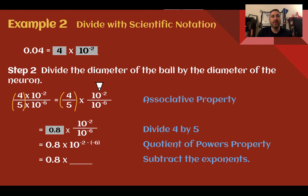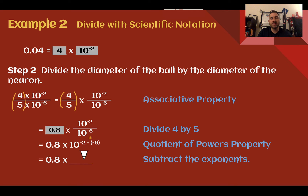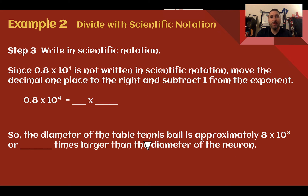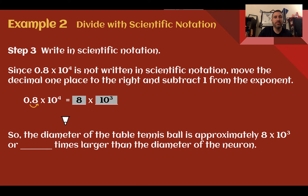So we divide the ball by the neuron: 4 times 10 to the negative 2 divided by 5 times 10 to the negative 6. Group the factors: 4 divided by 5 is 0.8. Then use the quotient of powers property for the powers of 10 — when dividing, we subtract: negative 2 minus negative 6. A double negative is the same as adding, so negative 2 plus 6 gives us 10 to the positive 4. So we have 0.8 times 10 to the 4th, but this is not yet in scientific notation since 0.8 is not between 1 and 10.